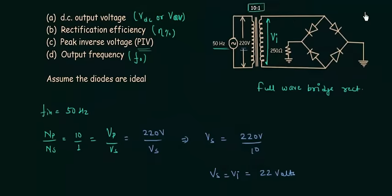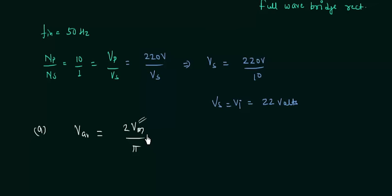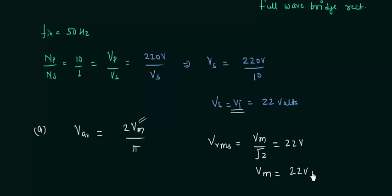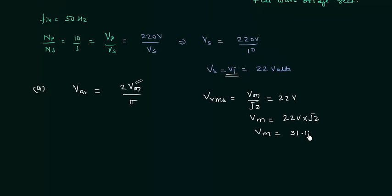Now we will solve Part A and calculate the DC output voltage. The formula is V_DC = 2Vm/π. To find Vm, we use V_rms = Vm/√2, and V_rms equals VI = 22 volts. So Vm = 22 × √2 = 31.11 volts.